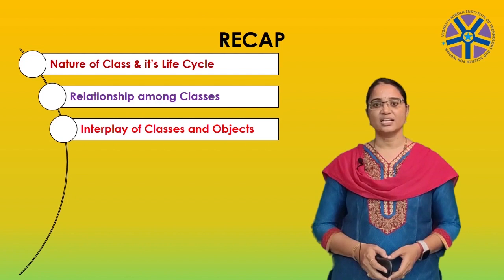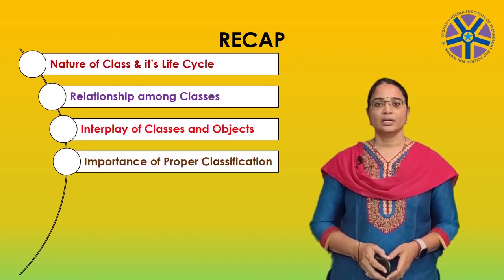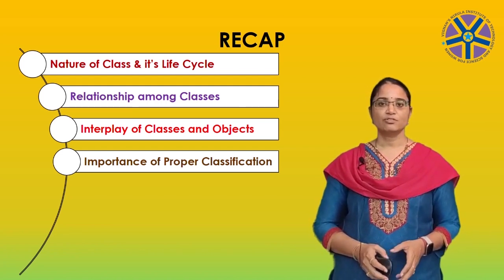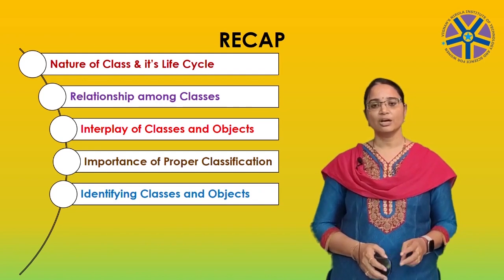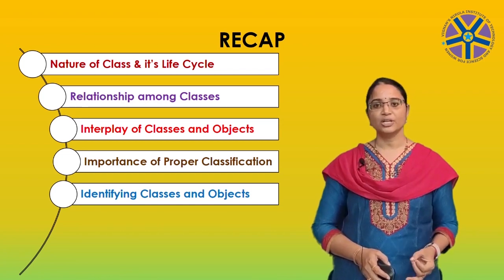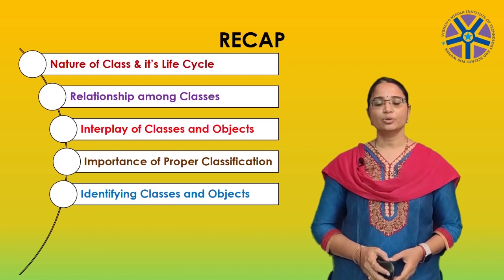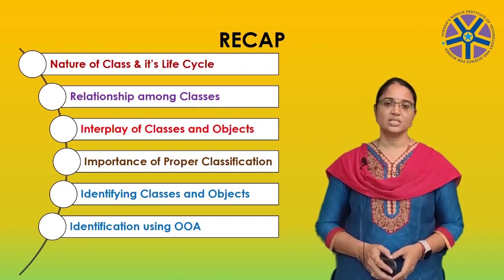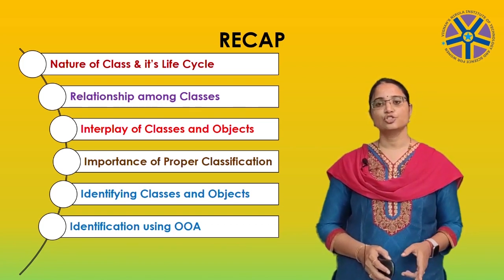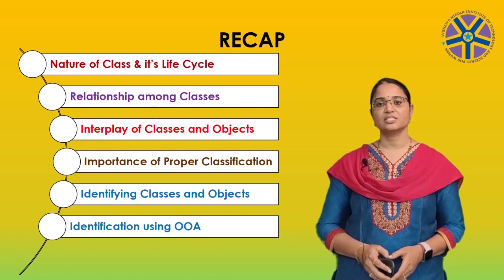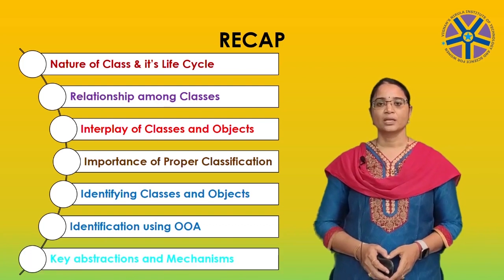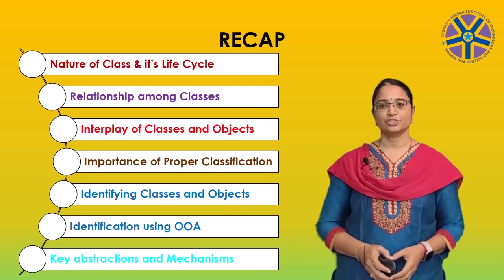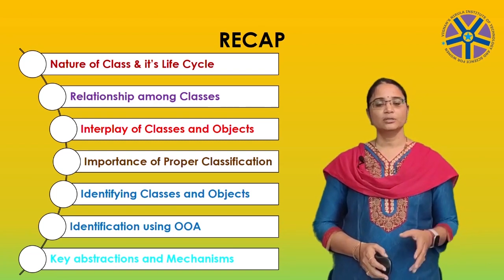Next we have seen the interplay of classes and objects, and then classification — which means the way whereby we order knowledge — and the difficulty of classification. We have seen identifying classes and objects using three types: classical categorization, conceptual clustering, and prototype theory. We have seen six approaches to identify classes and objects using object-oriented analysis: classical approach, behavioral analysis, domain analysis, use case analysis, CRC cards, and structured analysis. Finally, we have seen key abstractions and mechanisms, including how to identify and find key abstractions. In this unit we have entirely covered objects and classes.